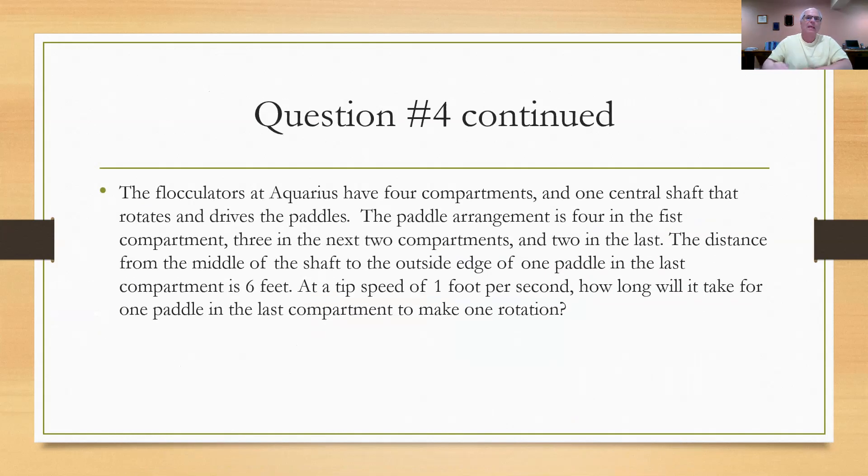So we go back to question number four and they ask us if we have these four compartments, one central shaft, and the distance from the middle of the shaft to the outside edge of one paddle is a radius of six feet. So we know that the diameter is 12 feet. The question is this, at a tip speed of one foot per second, how long will it take for one paddle in the last compartment to make one rotation?